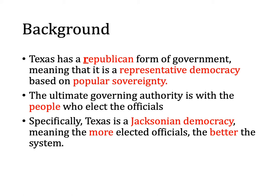As voters, we are hiring somebody to go to Austin and put forth legislation and vote the way that we have hired them to do. Texas is a Jacksonian democracy — Jacksonian as in Andrew Jackson, who thought that the more elected officials, the better the democracy. The fewer the elected officials, the weaker the democracy. The goal under a Jacksonian democracy is to have a lot of elected officials for a stronger democratic system.